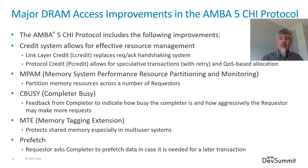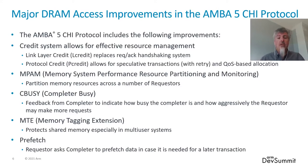Another key feature in AMBA 5 CHI is MPAM — the Memory System Performance Resource Partitioning and Monitoring — which allows you to partition memory across a number of different requester nodes. The C-busy or completer busy feature provides feedback from a completer to indicate how busy it is, so the requester can adjust how aggressively it makes requests. There's also the memory tagging extension, which protects shared memory especially in multi-user systems. And speculative transactions or prefetches allow a requester to ask a completer to prefetch data in case it's needed for a later transaction.